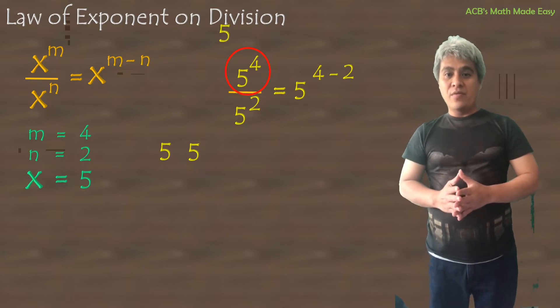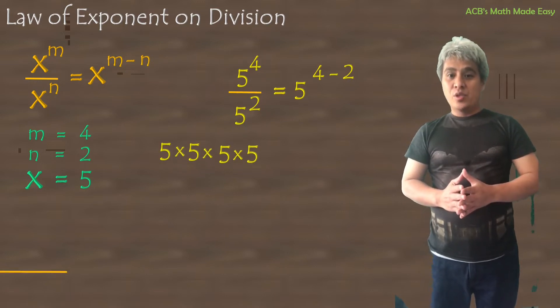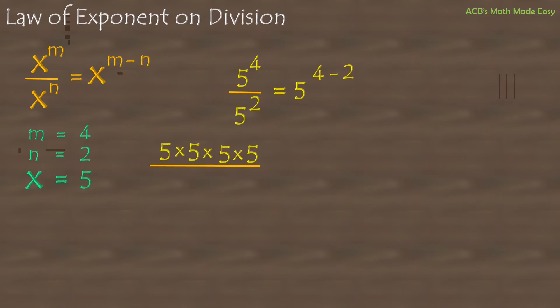5 raised to the power of 4 means write 5 four times and multiply them. And 5 squared means write 5 two times and multiply them. Equals 5 raised to the power of 4 minus 2 equals 5 squared.